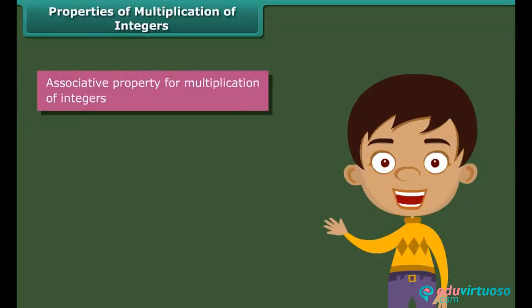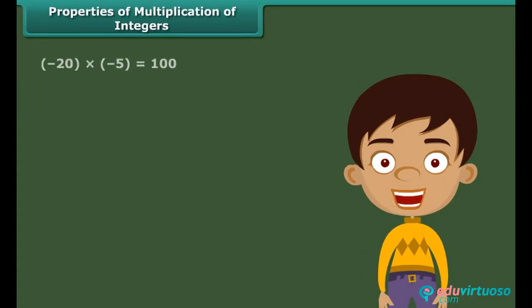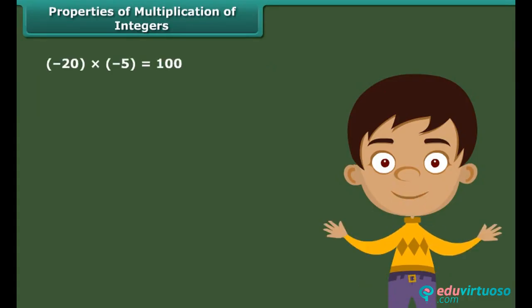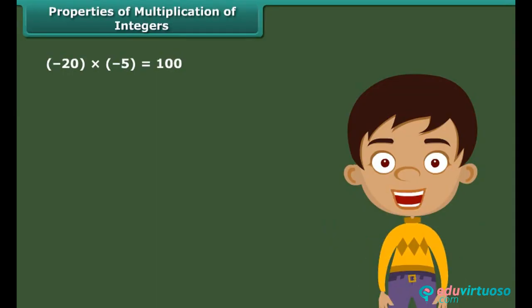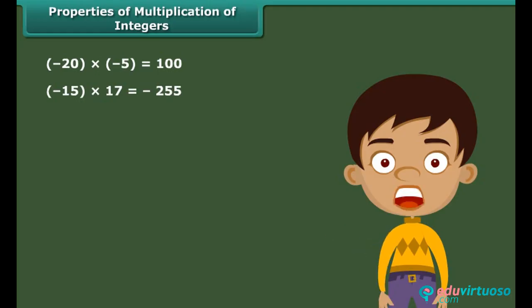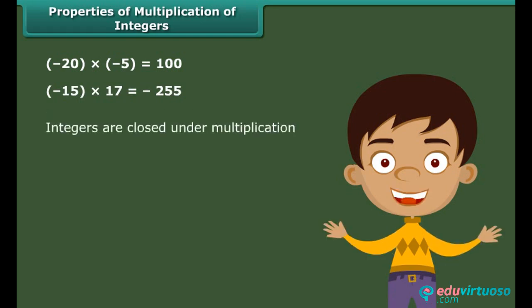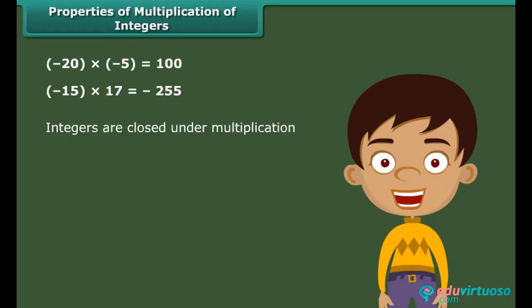The product of two integers is again an integer. For example, (−20) times (−5) equals 100, and (−15) times 17 equals −255. So we can say that integers are closed under multiplication.